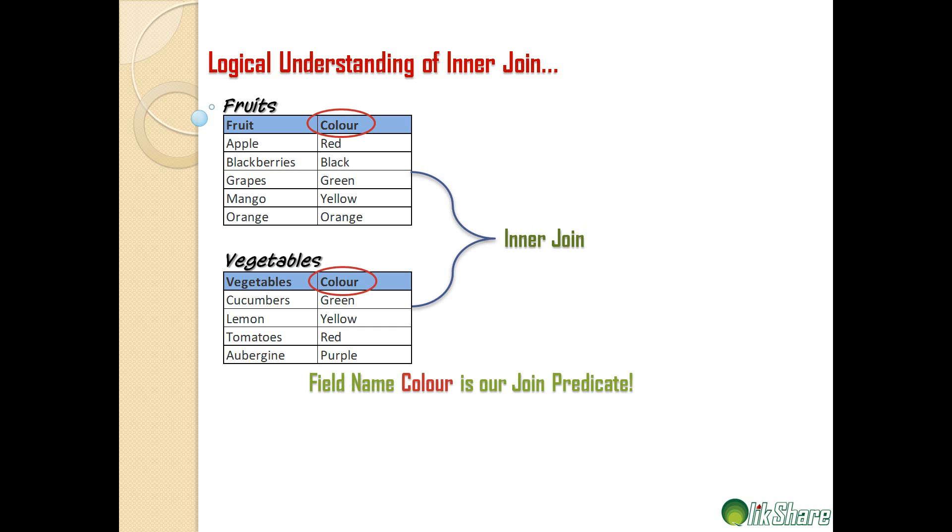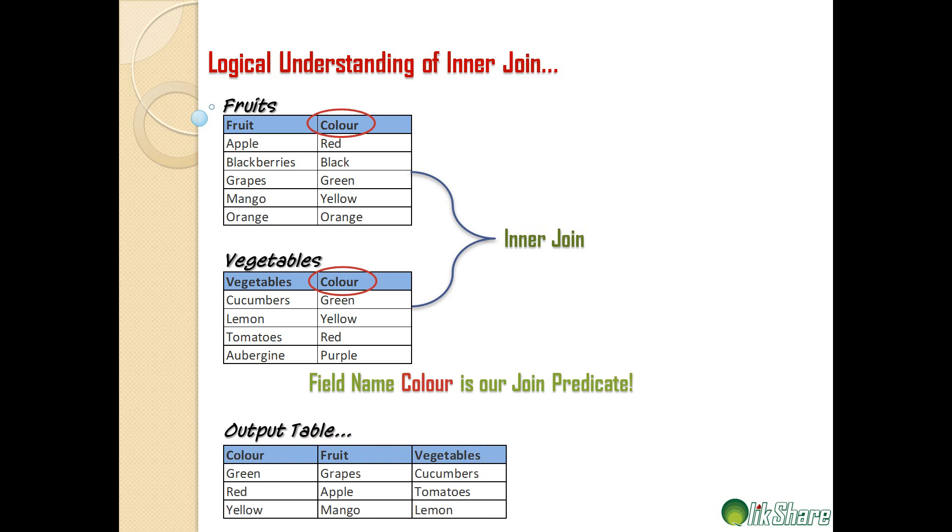The output table includes green, red, yellow because you see red here and you have red here, and you have green here and green here, and then you have yellow here and yellow here. Purple, orange, and black are not present in both the tables, so QlikView will exclude them. Let's look at the same structure as a Venn diagram.